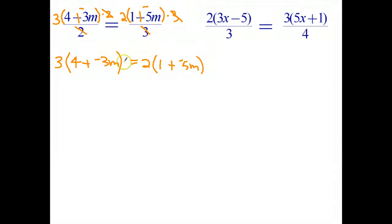Let's go ahead and finish solving this equation. So as we've done before, we start by multiplying out the brackets. 3 times 4 is 12, plus 3 times negative 3m is negative 9m. 2 times 1 is 2, plus 2 times negative 5m is negative 10m.